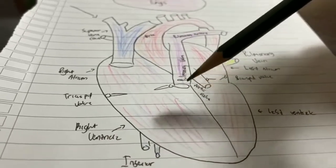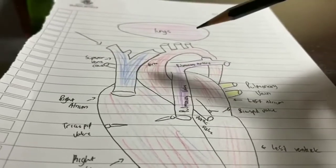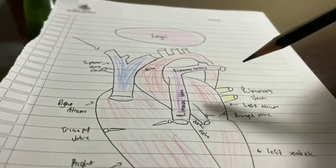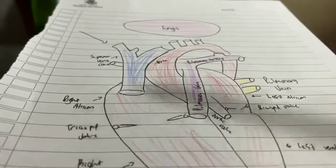Then, it goes to the pulmonary valve and into the pulmonary artery. From there, it goes to the lungs and then through the pulmonary vein, it goes back to the left atrium. That is called pulmonary circulation.